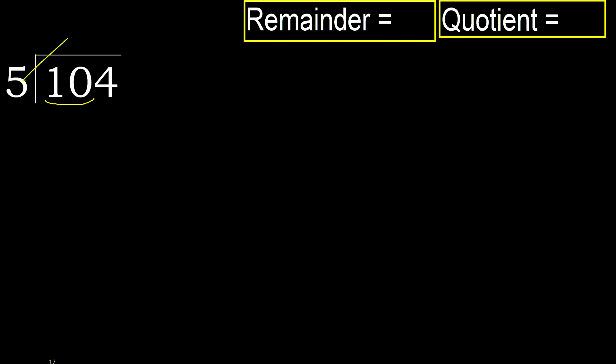5 multiplied by which number is nearest to 10, but not greater. 5 multiplied by 3 is 15, which is greater. Multiply by 2: 10 is not greater, ok.